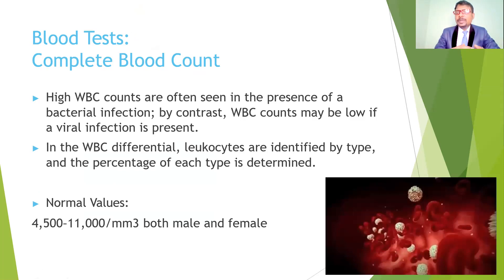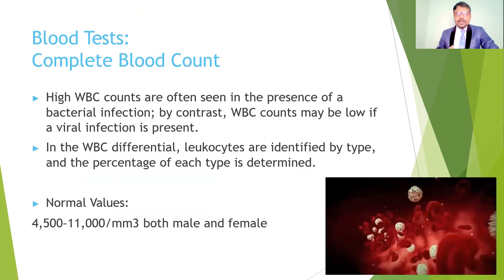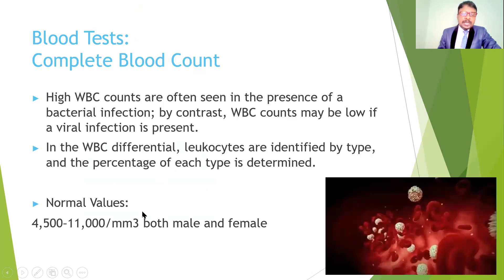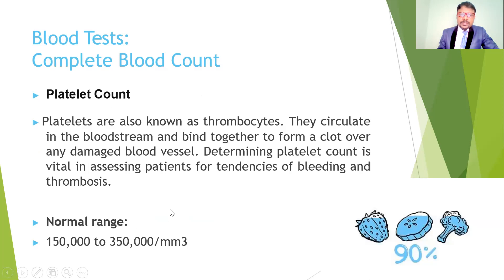In differential diagnosis, WBCs are identified by type and the percentage of each type is determined. The five types of leukocytes are basophils, eosinophils, neutrophils, lymphocytes, and monocytes. Each varies in number depending on the condition — for example, lymphocytes or eosinophils may increase in particular conditions, and basophils increase in others. The normal WBC count is 4,500 to 11,000 per cubic millimeter, the same for both males and females.